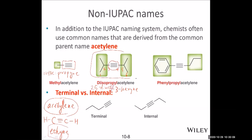You can see there are some alternatives in naming compounds. The last compound has a benzene ring — a phenyl group — on one end, and a propyl group on the other, and is named based on acetylene.